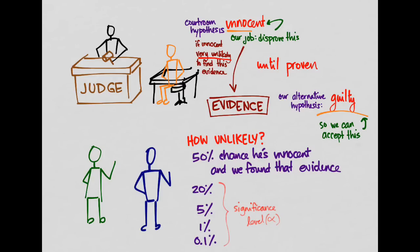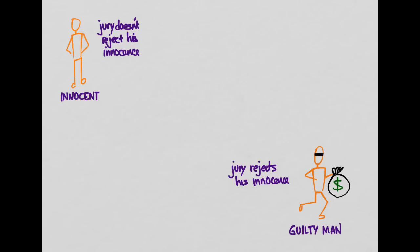There are four scenarios that can happen — two good, two bad. In the first good scenario, you have an innocent man and the jury does not reject his innocence, so we set an innocent man free. In the second good scenario, we have a guilty man and the jury rejects his innocence, so we put a guilty man behind bars. In both these cases, we made a correct decision.